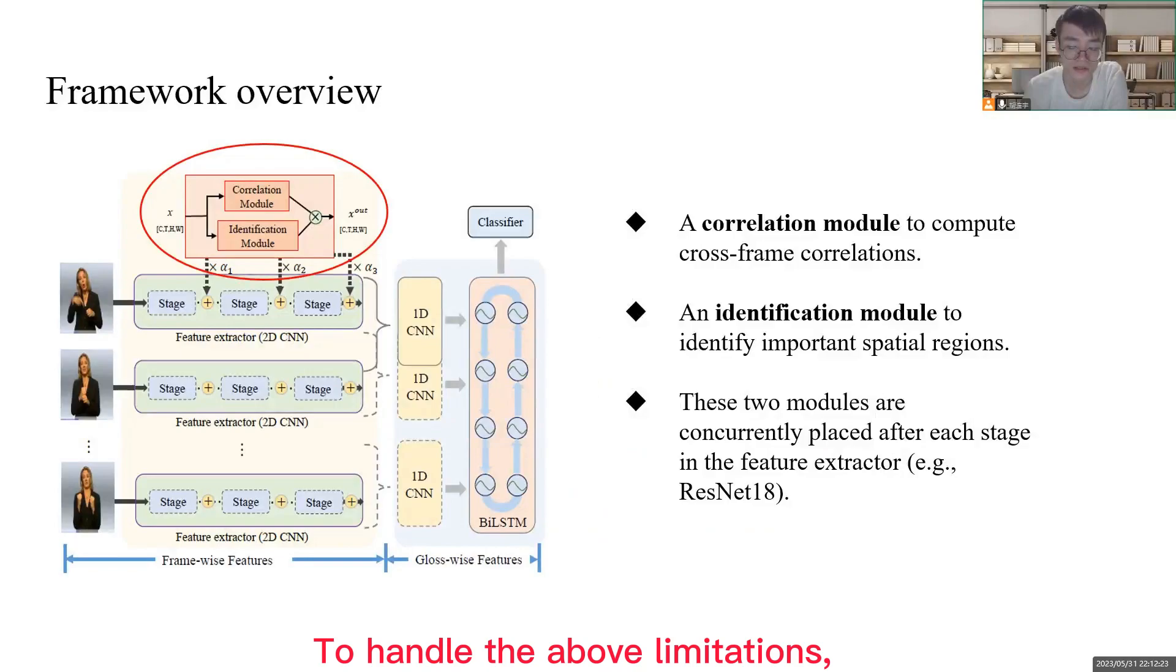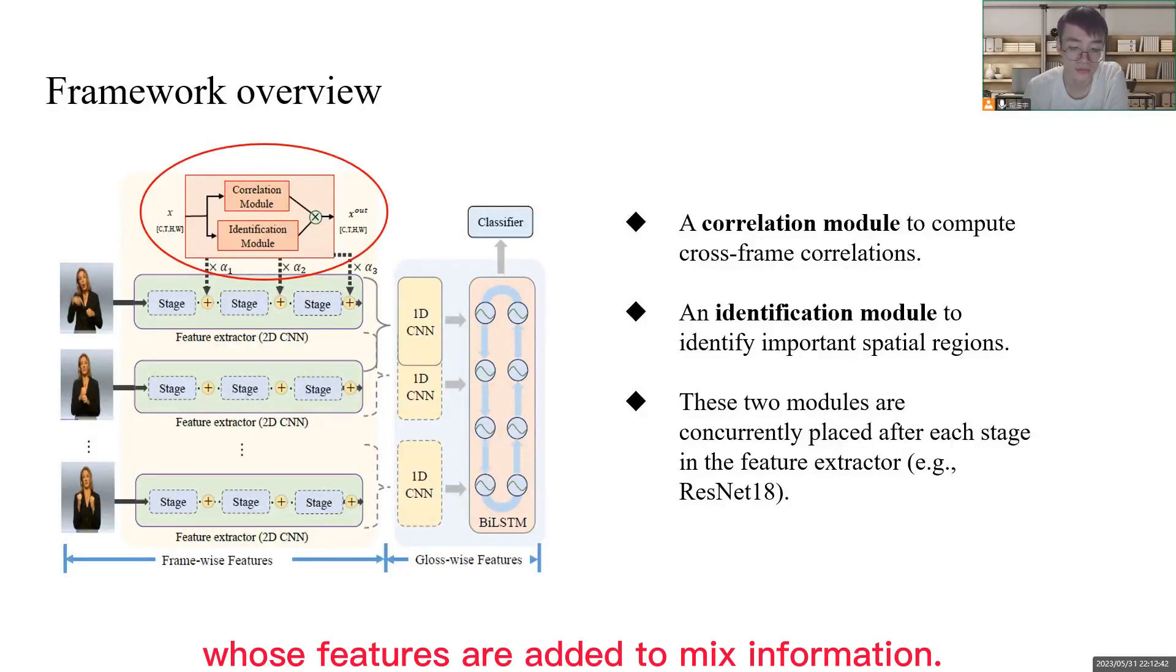To handle these limitations, we propose a correlation model to compute cross-frame trajectories and an identification model to identify important spatial regions, as shown in the figure. These two models are concurrently placed after each stage in the feature extractor. Both features are added to mix information.